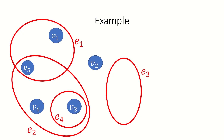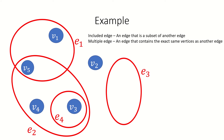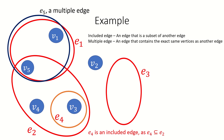Now back to our example, we can define two more terms relating to edges: included edges and multiple edges. Included edges, such as E sub 4 in this example, are those that are a subset of another edge in the hypergraph — in this case, E sub 2. Multiple edges are duplicate edges: when we have two distinct edges that cover the same set of vertices. In this hypergraph there are no multiple edges, but suppose we added edge E sub 5 — it contains the same set of vertices as E sub 1, meaning E sub 1 and E sub 5 would be multiple edges. Note that all multiple edges are included edges, and for hypergraphs with more than one edge, empty edges are also included edges.